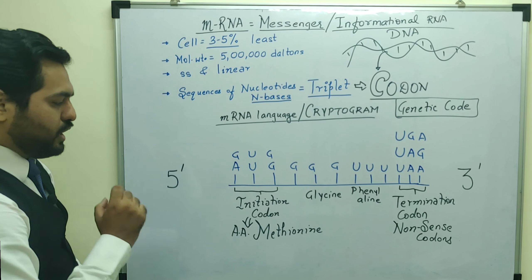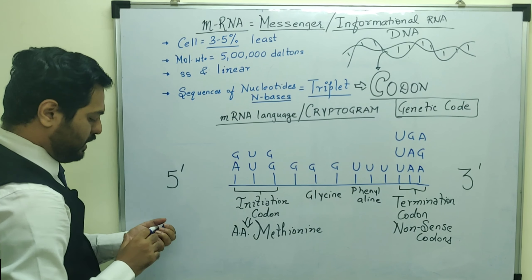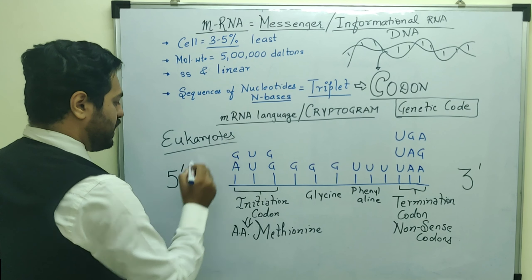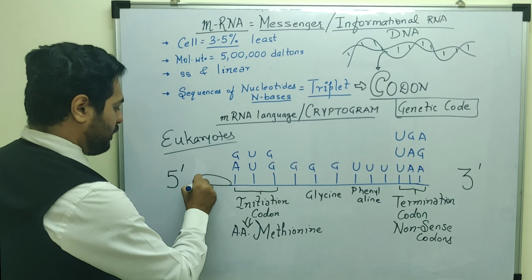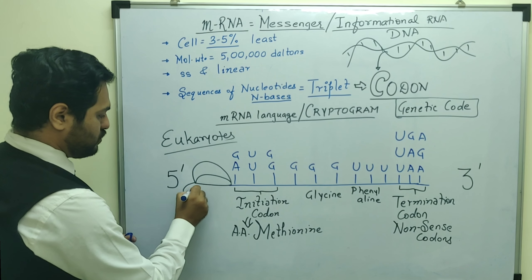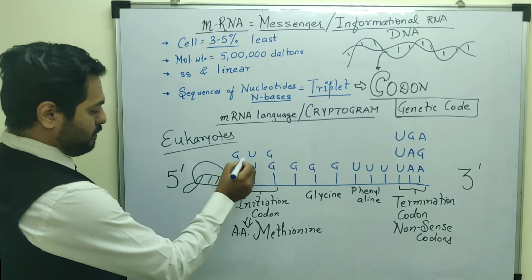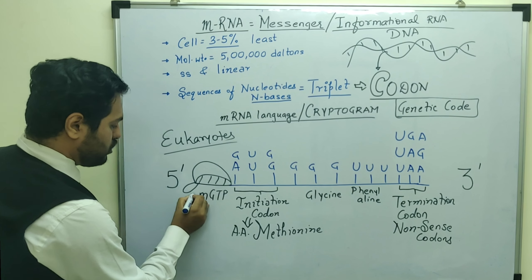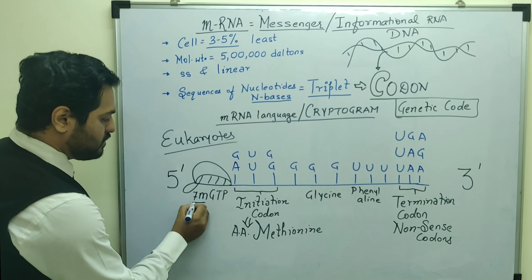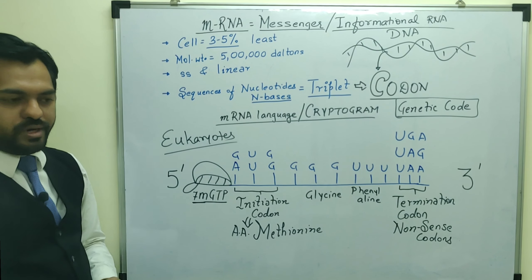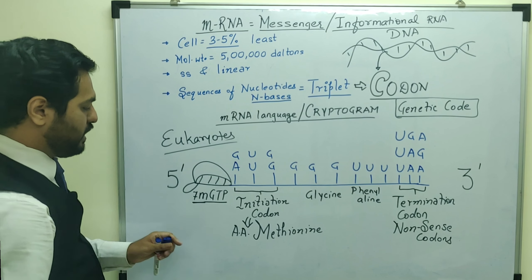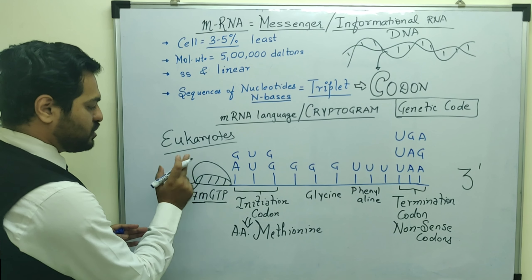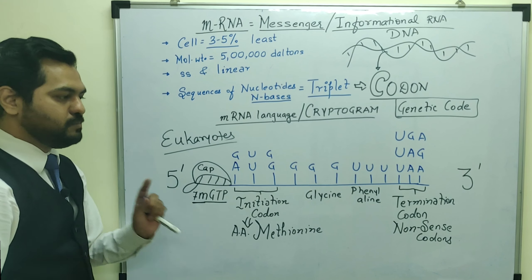Additionally, in eukaryotes, at the 5' end there is the presence of a cap. This cap is called the 7-methylguanosine triphosphate cap, or 7-mgTP cap. This is a characteristic feature of eukaryotic mRNA — at the 5' end, before the initiation codon, there is a 7-mgTP cap present.